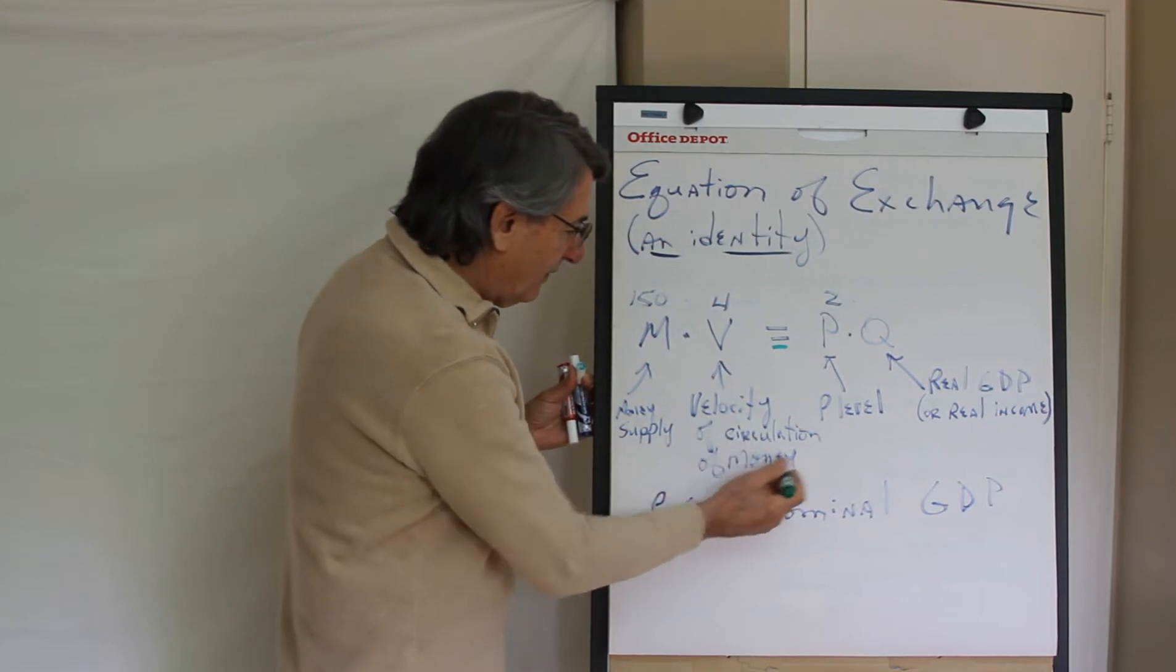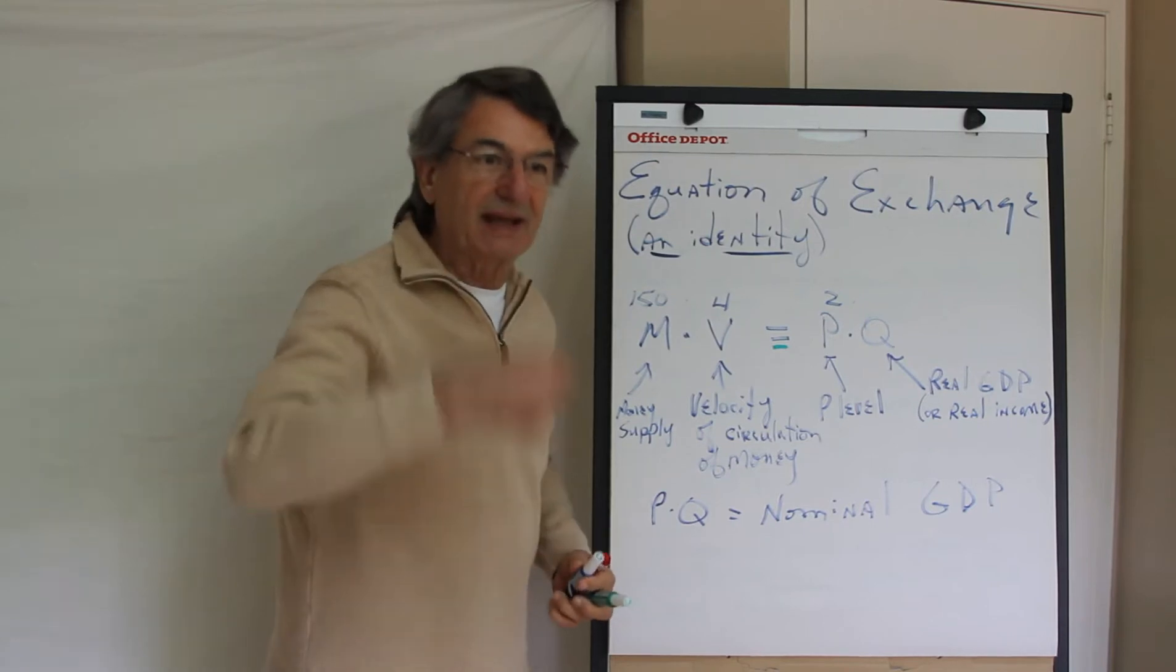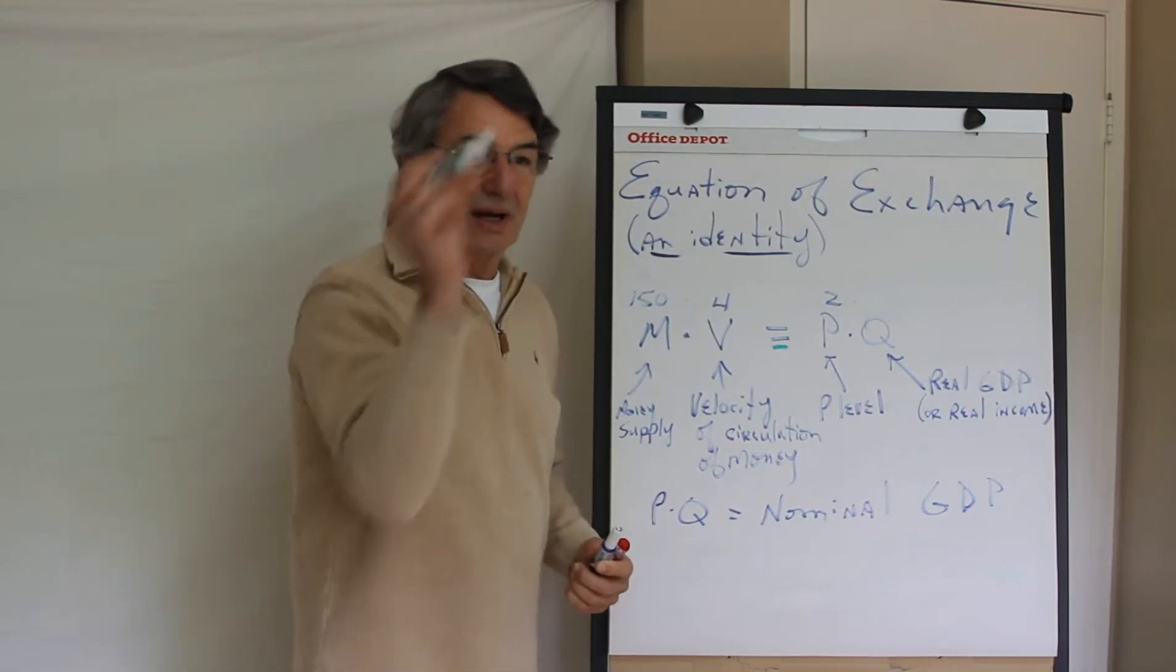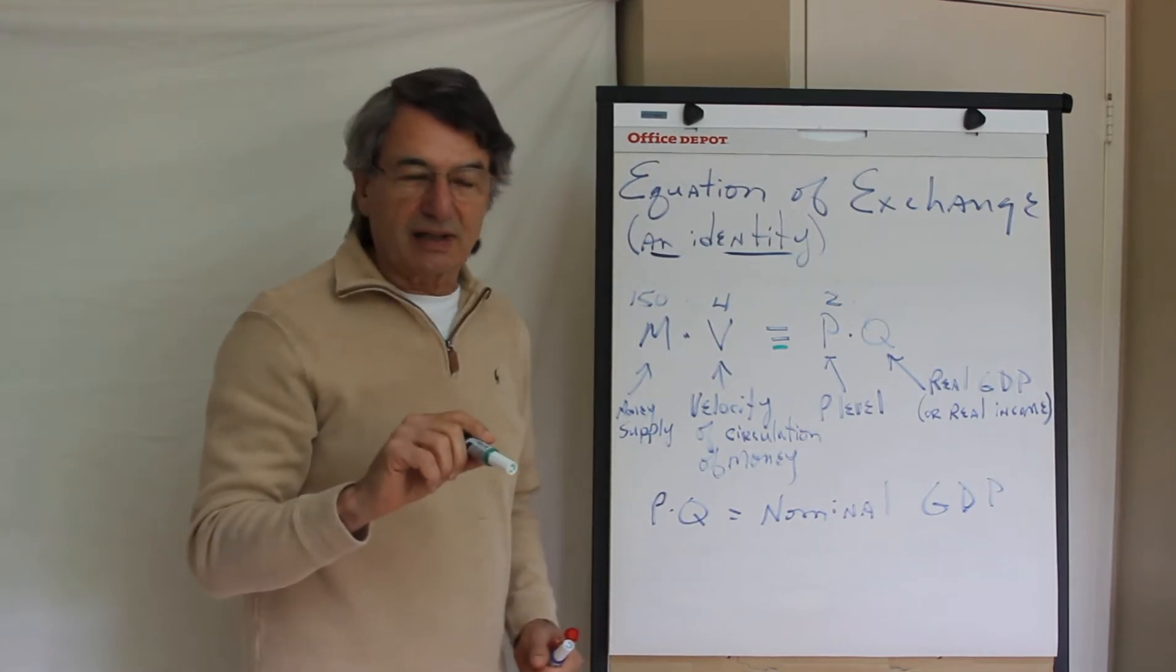Velocity of circulation of money is the number of times that a dollar is spent and re-spent in a year on a final good or service. If you want to think of it as the number of trips around the circular flow that a dollar takes, great.